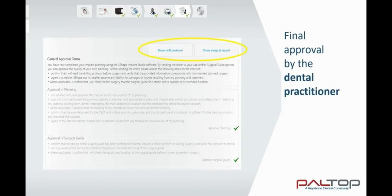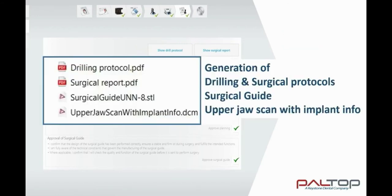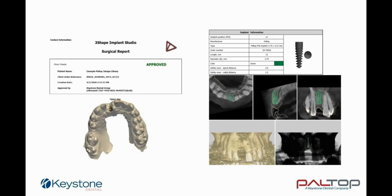The final approval of the planning must be given by the dental practitioner. After approval, the software will generate the drilling and surgical protocols, surgical guide and upper jaw scan with the implant information. Here we see the surgical protocol. It will include details of the tooth number, implant type and dimensions, an axial view, sagittal view, long axis view, 3D view and x-ray view.